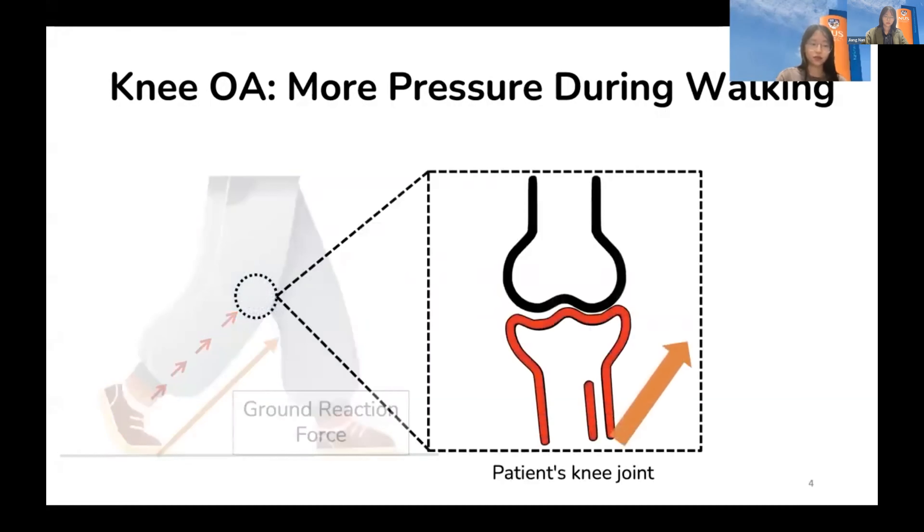The ground reaction force acts upon the lower part of the joint highlighted in red, which gives it an inclination of rotation. Such rotation further reduces the joint space and makes the lower part of the joint squeeze the upper part, putting more pressure on the knee joint and finally aggravating the knee pain while walking.